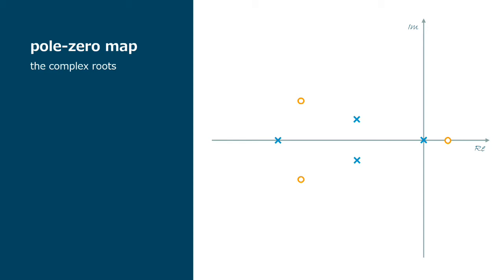The pole zero map is a representation on the complex plane of the poles and the zeros of the transfer function. And after a few weeks, you will be able to look at this map and immediately conclude about its stability, how fast it is, how oscillatory, and so on.